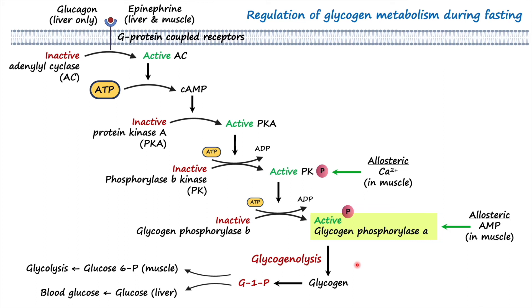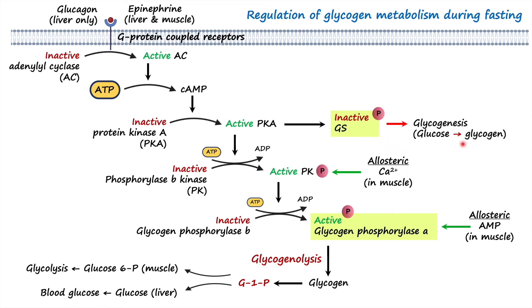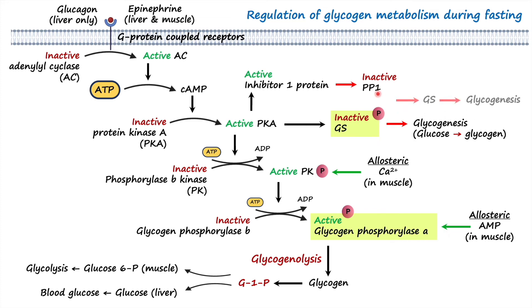Now let's discuss how glycogenesis is inhibited during the fasting state. When protein kinase A is activated it phosphorylates and inactivates glycogen synthase enzyme — when glycogen synthase is phosphorylated it is inactive, so glycogenesis is inhibited. PKA also activates inhibitor-1 protein, which inhibits protein phosphatase 1. When PP1 is inhibited it cannot dephosphorylate glycogen synthase, so the glycogenesis pathway remains inhibited.